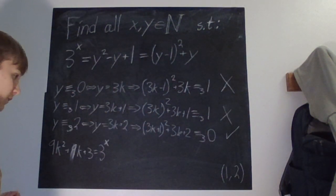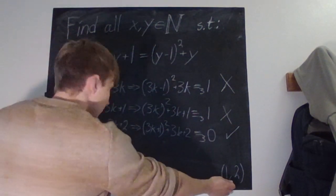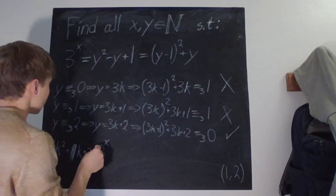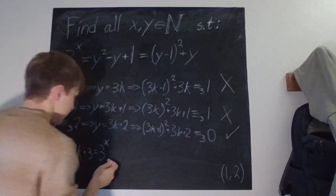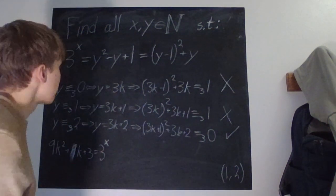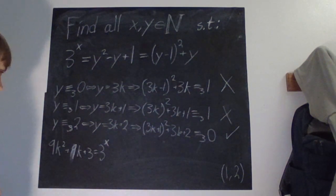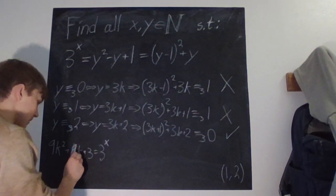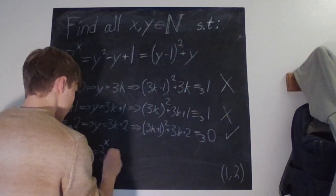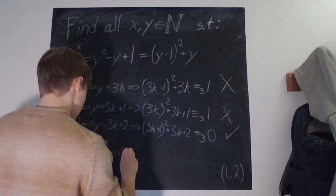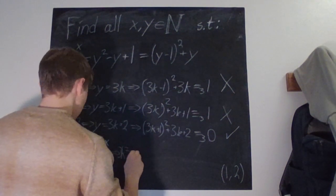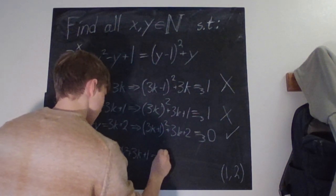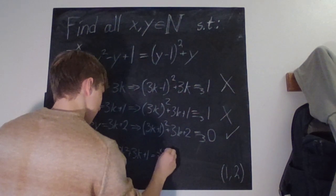So now we investigate when k is bigger than 1, that means we can divide by 3 everywhere. If x is bigger than 1, then this is 3 times 3 or more. We can always divide because x can't be 0. So this is equivalent to 3k squared plus 3k plus 1 being equal to 3 to the power of x minus 1.